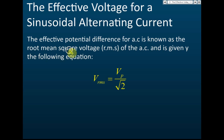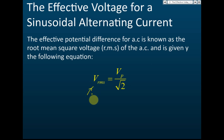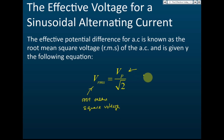The effective potential difference for alternating current is known as the root mean square voltage, or RMS voltage. The root mean square voltage of the alternating current is given by the formula: V_rms equals Vp over the square root of 2, where Vp is the peak voltage.